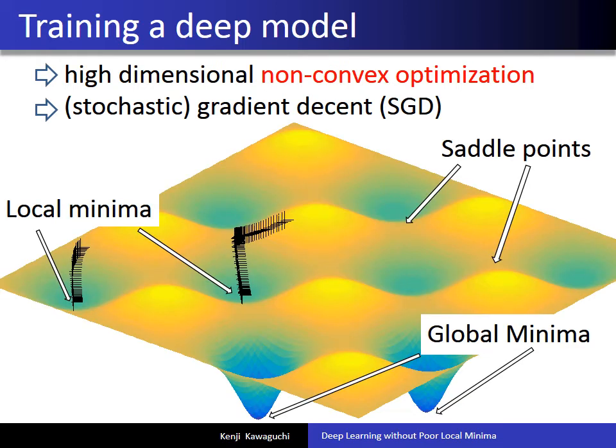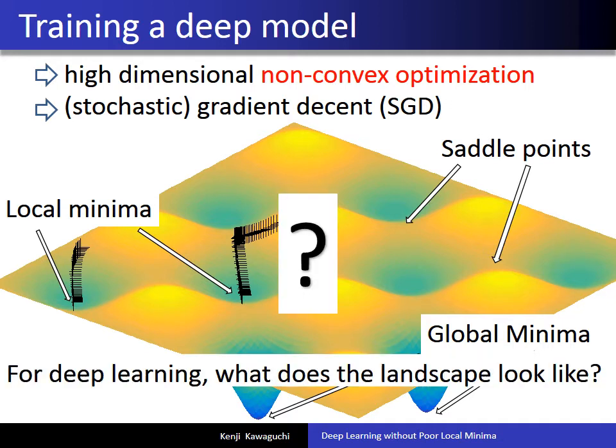But because of the non-convexity, local greedy algorithms can potentially get stuck near a locally optimal solution, as illustrated in this figure. So an important question is: for deep learning, what does the landscape look like? Does it look like something in this figure, or something more structured so that the use of gradient descent or SGD can be theoretically justified?